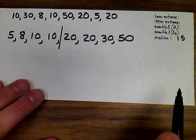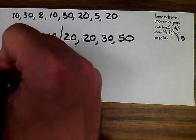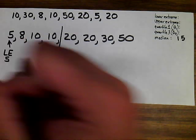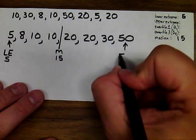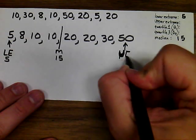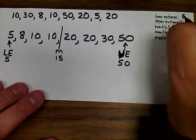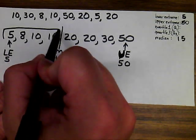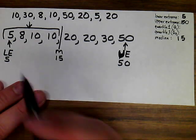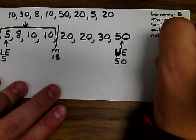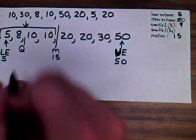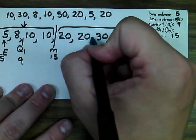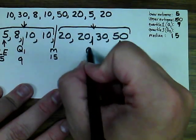The lower extreme is the lowest number in the data set — that's 5, sometimes abbreviated LE. The upper extreme is the greatest number, which is 50. Then we find quartile one and quartile three by looking at the lower and upper halves of the data. The lower half gives us quartile one: the middle falls between 8 and 10, which is 9 — so Q1 equals 9. The upper half gives us quartile three: the middle falls between 20 and 30, which is 25 — so Q3 equals 25.